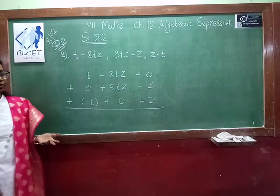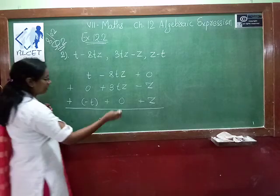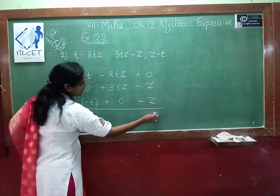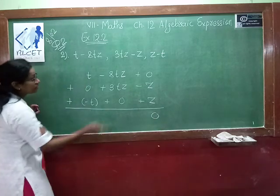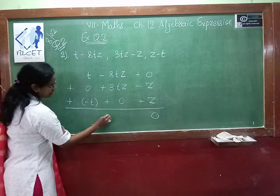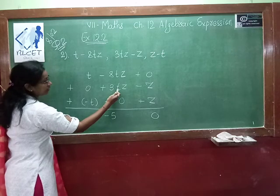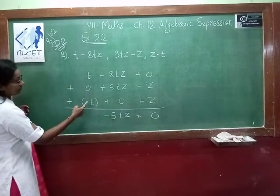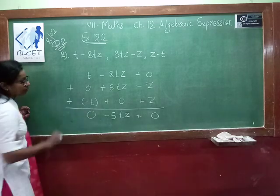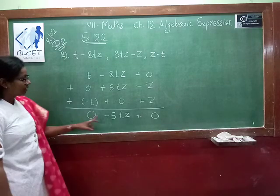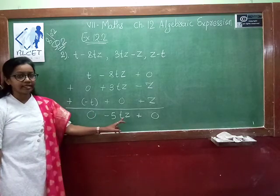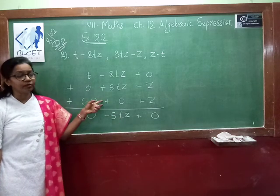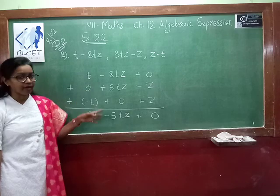Now we do the addition. Minus z plus z gives 0. Minus 8 plus 3 is minus 5, and the variable is tz, so minus 5tz. t minus t gives 0. So the answer is minus 5tz. This is the vertical method where you arrange the terms column-wise.